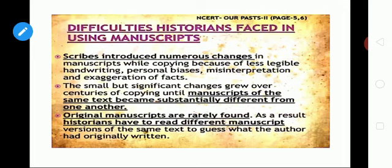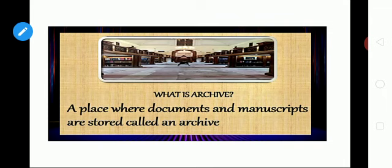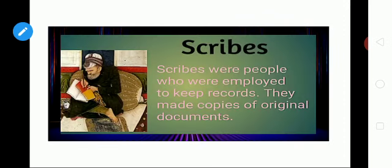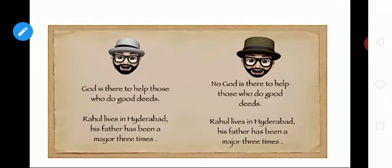As a result, historians have to read different versions of the same text to guess what the author had originally written. An archive is a place where documents and manuscripts are stored. Scribes were people employed to keep records and make copies of original documents. For example, one copy reads 'God is there to help those who do good deeds' while another copy reads the same — showing how small copying differences arise.